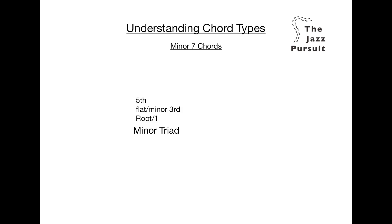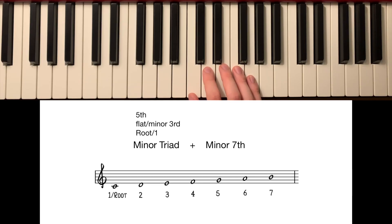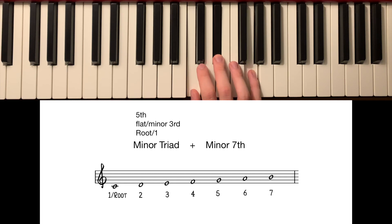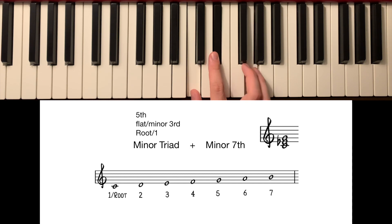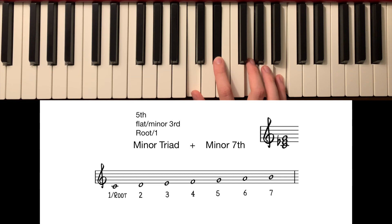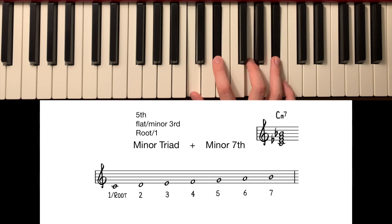A minor 7 chord is made using a minor triad — the 1, flat 3rd and 5th from our major scale — plus a minor 7th. Let's take a look and build a C minor 7 chord. Here's our C major scale, and first we need to find our minor triad, the 1, flat 3rd and 5th. This is C, E flat and G. Remember, minor simply means smaller, so by flattening our major 3rd E, we're making the distance between the root and 3rd smaller, turning our triad minor. Next we need our minor 7th, so we find our major 7th and flatten it. The major 7th is B, so we flatten this to make our minor 7th B flat. Therefore, our C minor 7 chord is made up of C the root, E flat the minor 3rd, G the 5th and B flat the minor 7th.